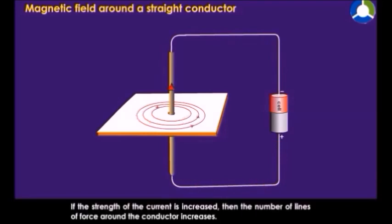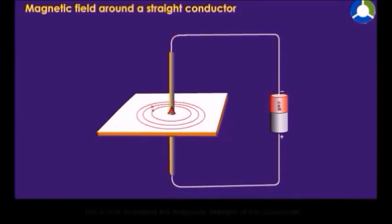If the strength of the current is increased, then the number of lines of force around the conductor increases. This, in turn, increases the magnetic strength of the conductor.